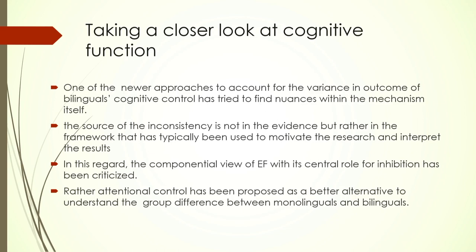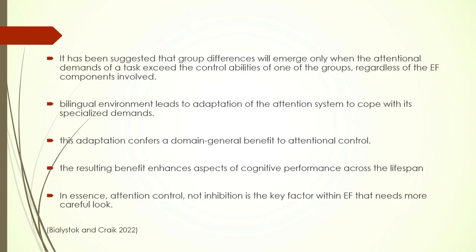There is a change — one of the newer approaches to account for variance is that bilingual cognitive control has tried to find nuances within this mechanism. It is not that the evidence is problematic, but the framework with which we look at the evidence is considered problematic. Till now, inhibition has been the central focus, but now there is a proposal that rather than inhibition we must look at attentional control. Attention control and inhibition are both part of executive function, but so far inhibition was getting more attention than attentional control.